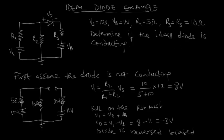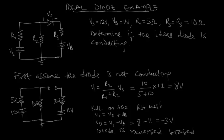My first assumption. And we saw that the diode is reversed biased since it doesn't conduct. Because Vd is equal to minus 3 volts.